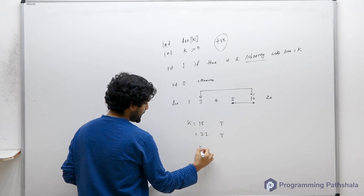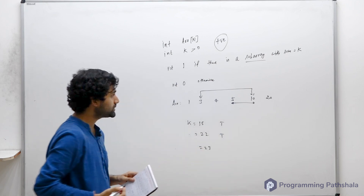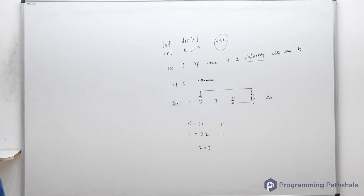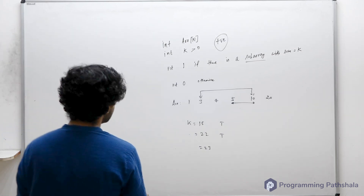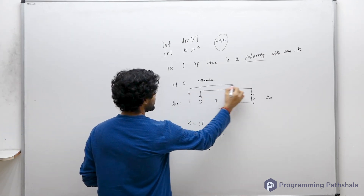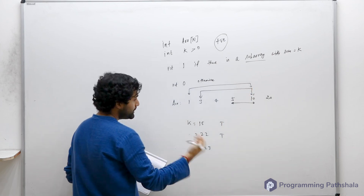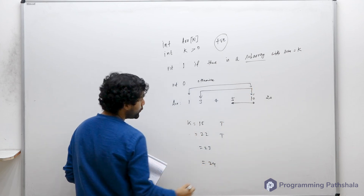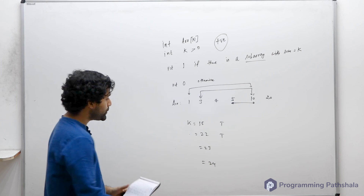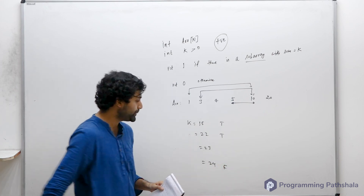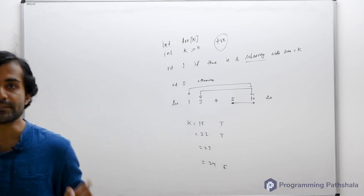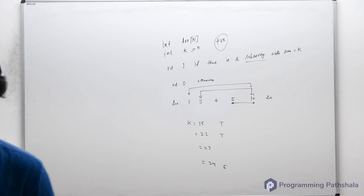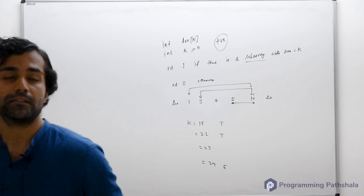For k = 23, the answer is also true because a valid subarray exists. But for k = 24, there is no valid subarray, so you'd be tempted to return false. That is the problem statement.